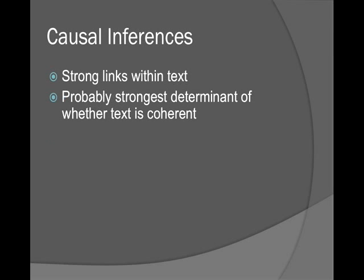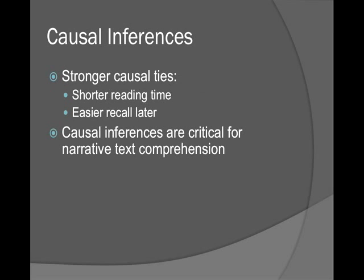Last but not least, there are causal inferences. Causal inferences help us understand why things happened — 'A caused B' sort of relationships — and they create strong links in the text. Causal inferencing is the most important piece for coherency, given that you have the background knowledge. If you don't have these causal links, you can't pull in the background knowledge. If a passage has a causal tie, we have shorter reading time and it's easier to recall that information later.